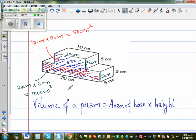So the total area of the base would be 100 centimeters plus 50 centimeters. So the area of base is 100 centimeters squared - it's always good to write the unit - plus 50 centimeters squared.